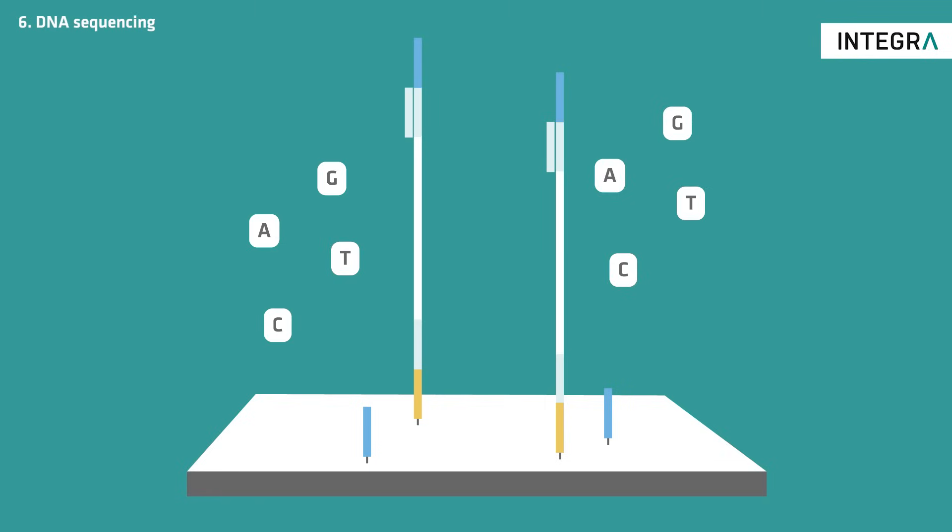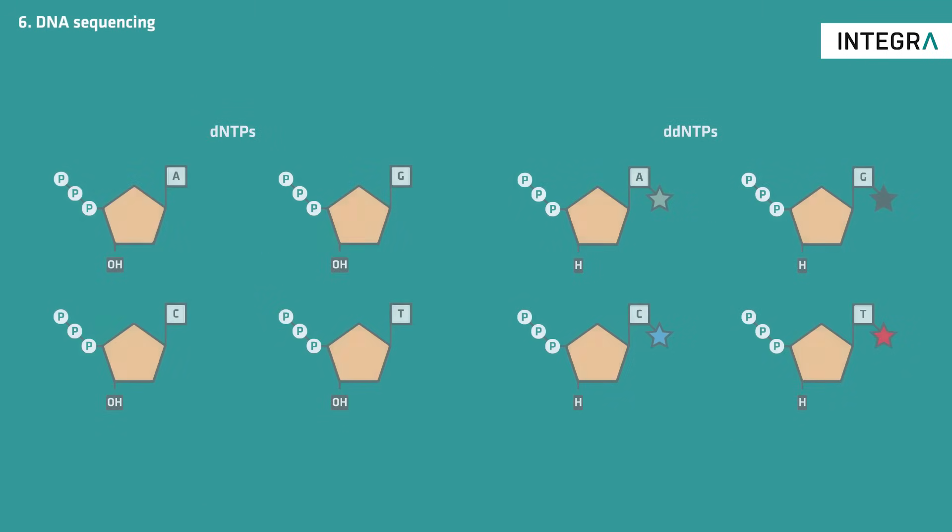However, instead of DNTPs, fluorescently labeled DDNTPs are added to the reaction mixture. Unlike DNTPs, these DDNTPs lack a hydroxyl group that allows the next nucleotide to be added to it. Moreover, they are labeled with different colored fluorescent dyes for each base.